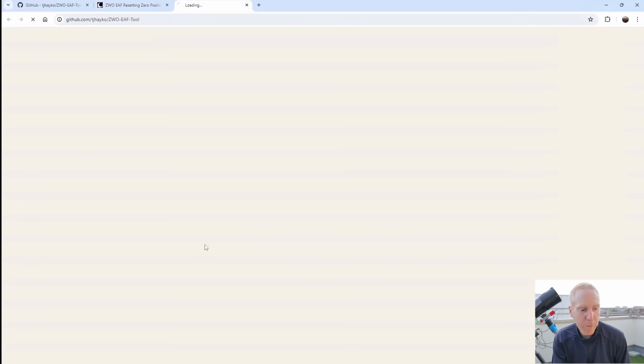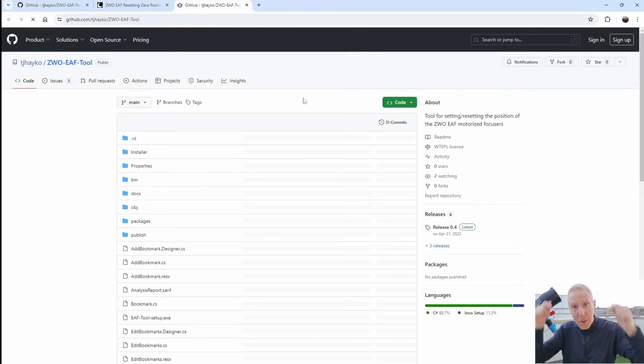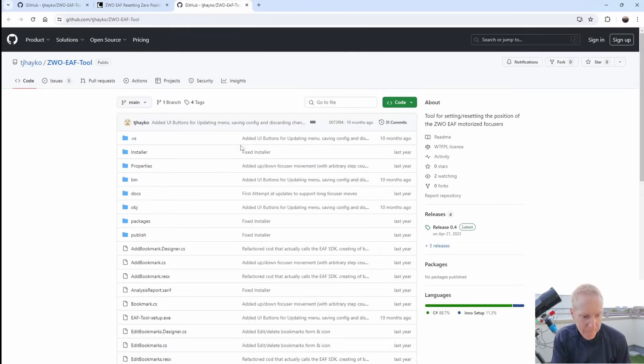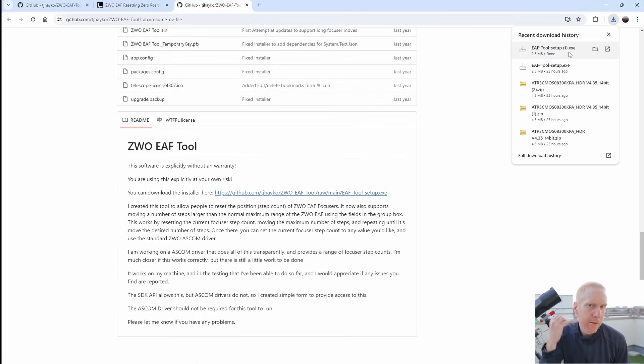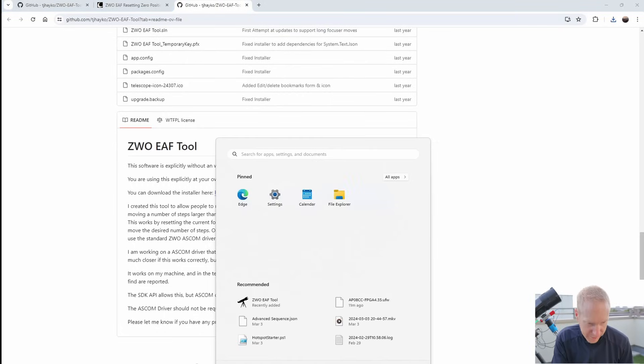And so to download it, you'll want to go to the GitHub repository. I'll put the link down in the description. And then once you've reached it, you have a link to the installer there. So you just click it. It will download the installer. And once it's downloaded, you can simply click it and do the next, next, next finish kind of dance to install the software.